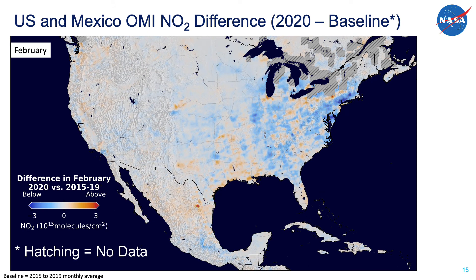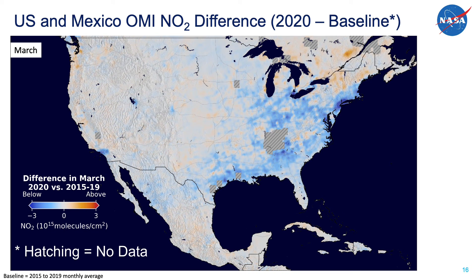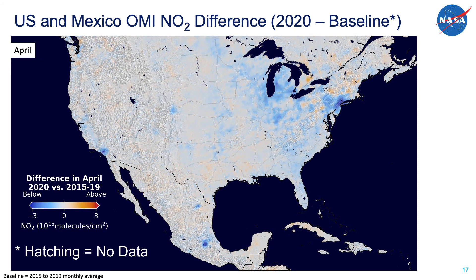Now showing the February 2020 NO2 difference map for the US and Mexico — the eastern half of the US is mostly blue, or slightly lower than normal, but Monterrey, Mexico seems a bit higher than average. By March 2020, more of the eastern US is blue; New York and Long Island are dark blue, and Los Angeles is clearly lower than normal. By April 2020, NO2 levels in Chicago and the Lake Michigan region are lower, and the same for Denver and Los Angeles. In Mexico, there is a large NO2 reduction in Mexico City and also for Monterrey.